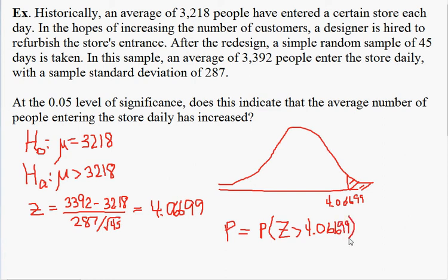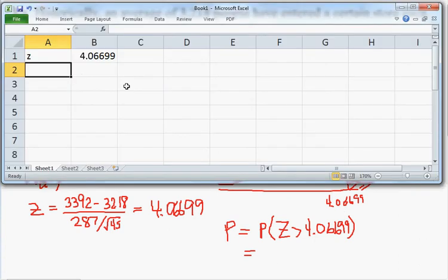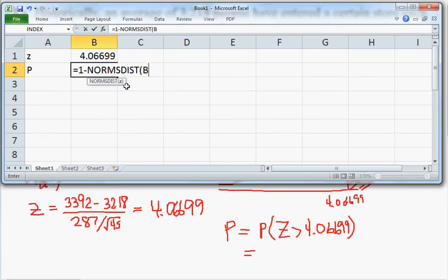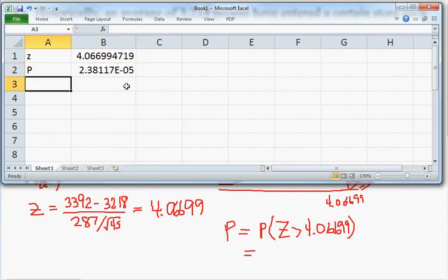On a TI calculator, I would use the normal cdf command with 4.06699 as my left endpoint and 10 to the 99 as my right endpoint. Using Excel, the p-value would be equal to 1 minus norm s dist of that value. Norm s dist, for those of you that use Excel, returns the area to the left, and so 1 minus that would be the area to the right. And so the p-value works out to be 2.38 times 10 to the minus 5.